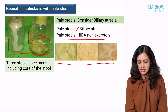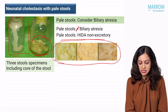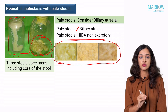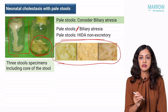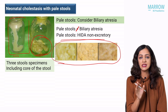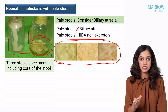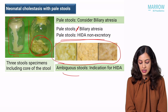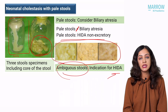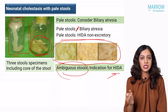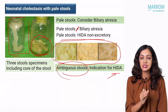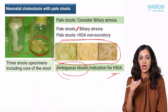If this kind of baby with classic pale stools goes for HIDA scan, it is going to be non-excretory. So where is HIDA going to be useful? It is going to be useful in cases with ambiguous stools — when you are not able to clearly determine whether they are pale or pigmented. That is when HIDA is going to be helpful, because in that case if the stools are pigmented or ambiguous, then HIDA will be excretory. And if it is excretory, you can rule out biliary atresia. Whereas if it is non-excretory, you should still consider other causes apart from biliary atresia and work towards them.